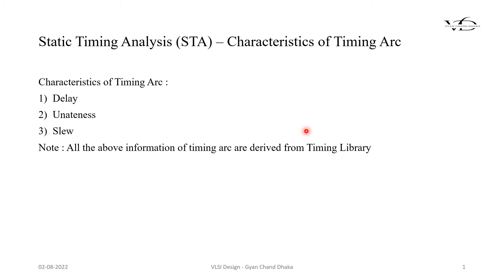In this chapter, which is chapter 3 of the static timing analysis series, we are going to learn about the characteristics of a timing arc. There are three main characteristics of a timing arc: delay, unitness, and slew. In this video, we are going to cover the delay characteristics of a timing arc. So let's get started.